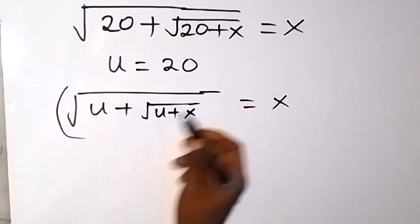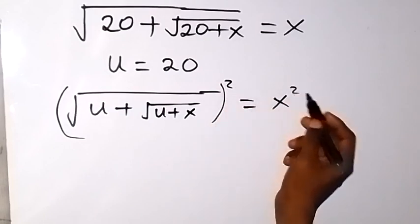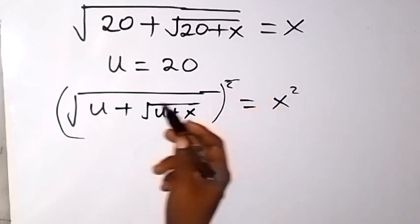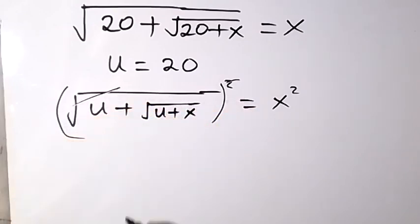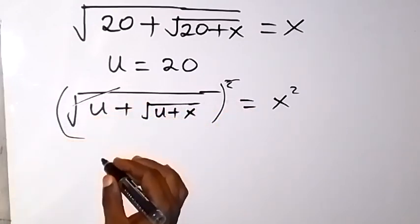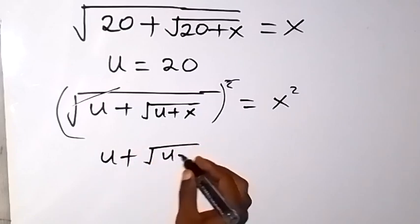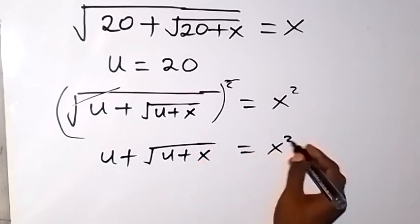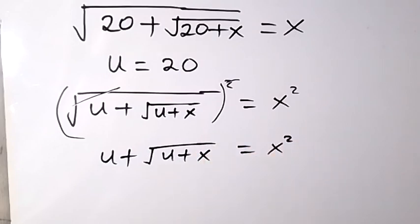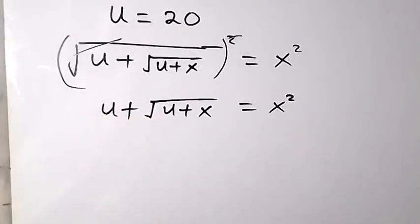Let's solve from here. We take the square on both sides — square on this side and square on this side. The square will cancel the first square root, and we are left with u plus root u plus x equals x squared.